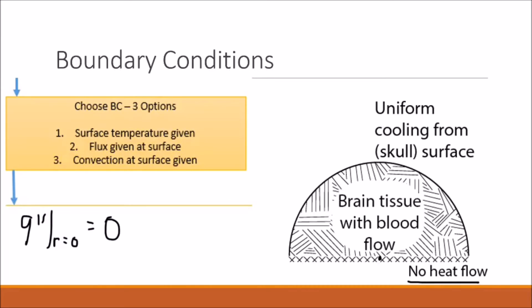We're also told that the temperature at the outer surface of the brain, this surface here, is held at 30 degrees Celsius, which is also equal to 303 Kelvin.